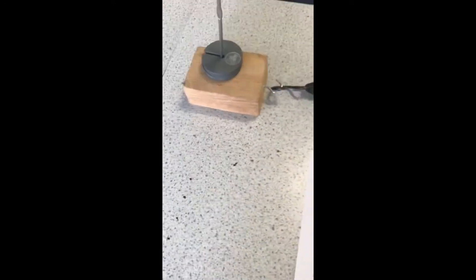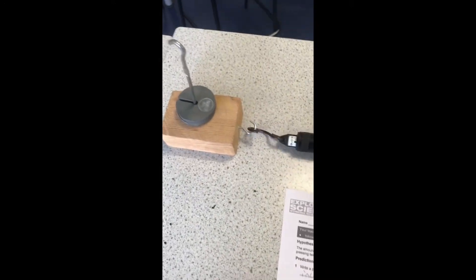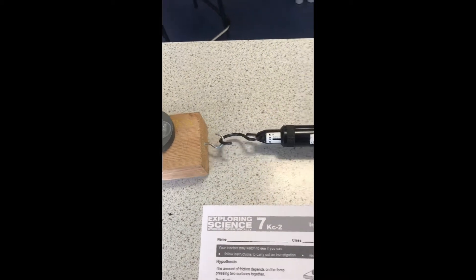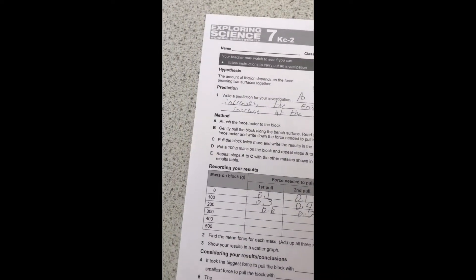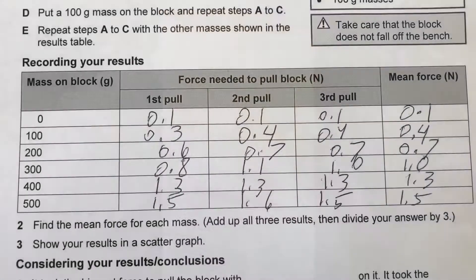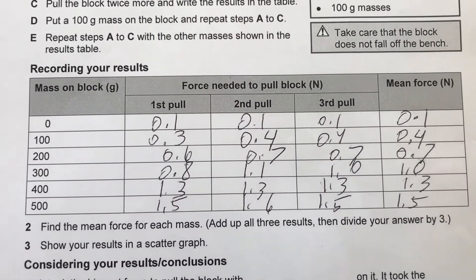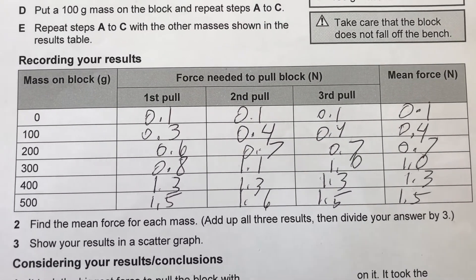It's important we try and pull this at the same speed or same rate every time. As you can see if I pull it very quickly the amount of force increases quite a bit. So we must ensure we pull it at the same rate so we have a fair test. Once again 0.7 Newtons. Continue this experiment with 300, 400, and 500 grams.